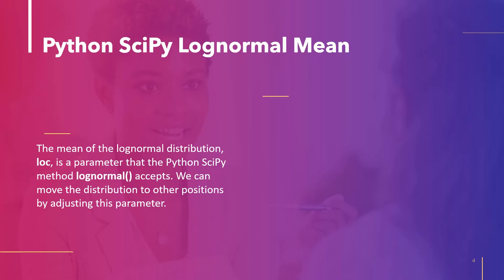The next topic is Python SciPy log normal mean. The lognorm method accepts a parameter loc, which is the mean for the log normal distribution. Using this parameter we can shift the distribution to a different position. Let's take an example and shift the log normal distribution to a different position.